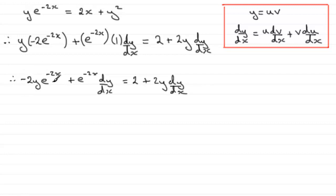So if we do that, we're therefore going to have e to the minus 2x dy/dx, and then minus the 2y dy/dx, and that's going to equal this 2 plus this term here, 2y e to the minus 2x.